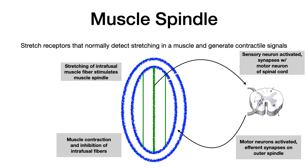As this happens, those signals are also inhibiting the ability of the intrafusal fibers to detect more stretch. If that inhibition was not happening, more stretch would get detected, more signals would be sent to the spinal cord, and there'd be more extrafusal contraction. This reflex would happen over and over again, and over time you would get a spastic, hypertonic muscle that's really painful.